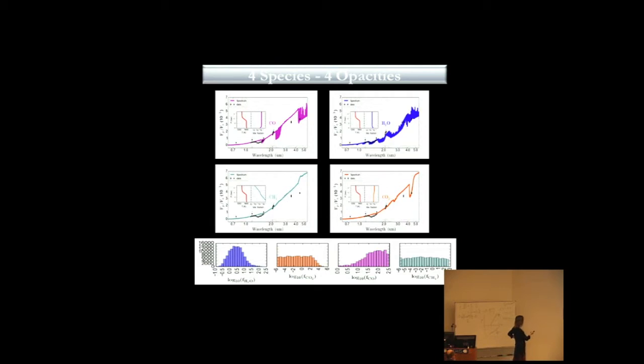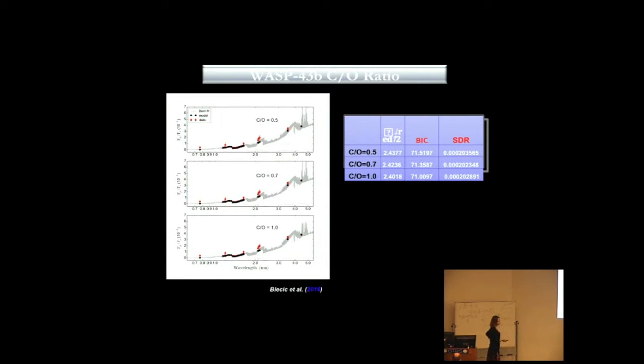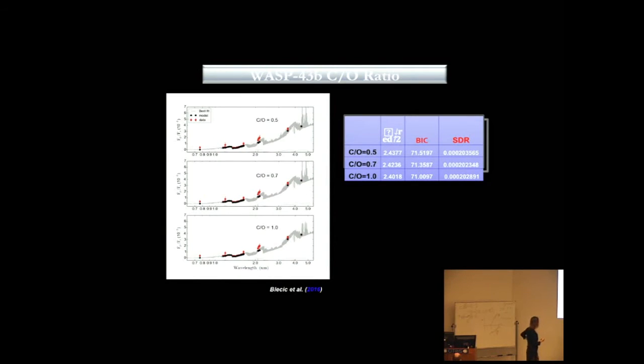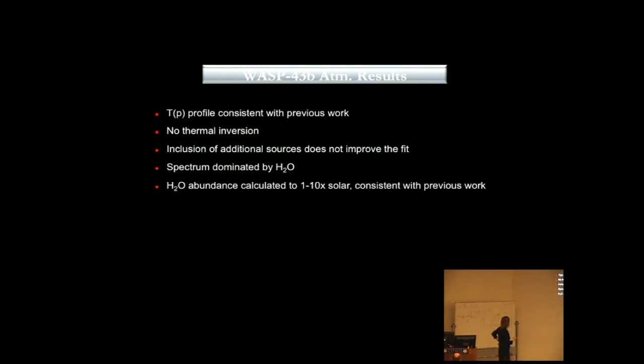What I also did here, trying to figure out which species has the most influence on the final best fit model, I ran a forward model using the best TP and abundances with only one opacity, which is water, CO, CH4, and CO2. What you can see here, the most influence on our spectrum comes from water, which you can also see in the posterior histograms. I also tried different C to O ratios, concluded that the difference between different C to O ratios here is only marginal, so we cannot conclude much about that. The TP profile is consistent with previous work, no thermal inversion, and we constrain water to 1 to 10 solar.